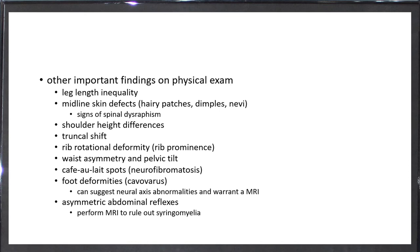There are other important findings on physical exam. You have to look for leg length inequality because this could be the reason this girl or boy are getting scoliotic in order to let one short limb reach the ground. Midline skin defects because it could be part of spinal dysraphism. Shoulder height difference, truncal shift that denotes the compensation of the curve, rib rotational deformity or rib prominence because this is usually the most disfiguring. Waist asymmetry, pelvic tilt, café au lait patches for fear of neurofibromatosis, foot deformities because it's common and suggests neural axis abnormality, and asymmetrical abdominal reflexes because then you need an MRI to rule out syringomyelia.